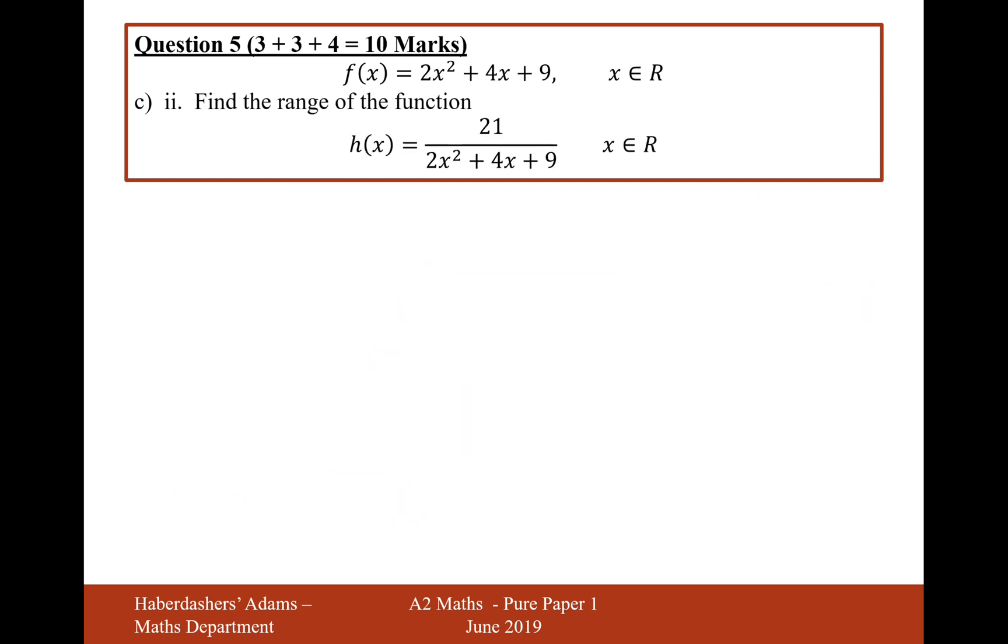And moving on to c i i. Let's just remind ourselves of the f of x function. f of x was 2 brackets x plus 1 squared plus 7. State the range of the function h of x. Okay, that's a very good question. So how are we going to work out the range of this function given that our f of x function is on the bottom?